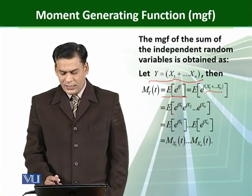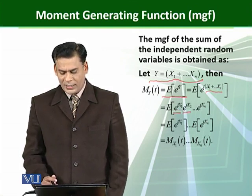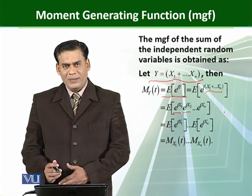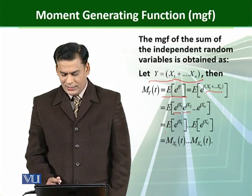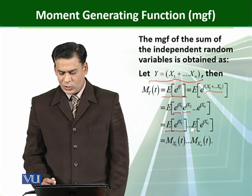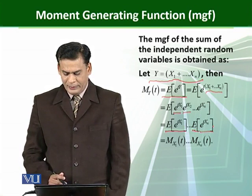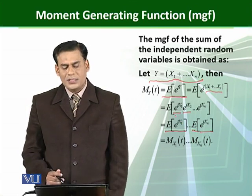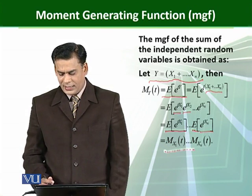That is, E[e^(tX1)] times E[e^(tX2)] and so on up to E[e^(tXn)]. And we can see that E[e^(tX1)] can be written in terms of the moment generating function, that is M_X1(t), and so on up to M_Xn(t).